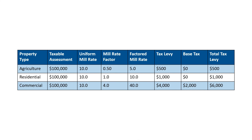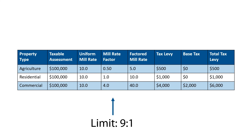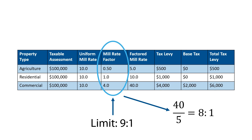Now let's discuss the tax tool limits. As mentioned earlier, legislation puts a limit on the mill rate. With the sample calculations, the lowest factored mill rate is 5 and the highest factored mill rate is 40. To calculate the mill rate ratio, we divide 40 by 5, resulting in a mill rate ratio of 8 to 1. The mill rate ratio of 8 to 1 in our sample calculation is within the current legislative limit of 9 to 1.